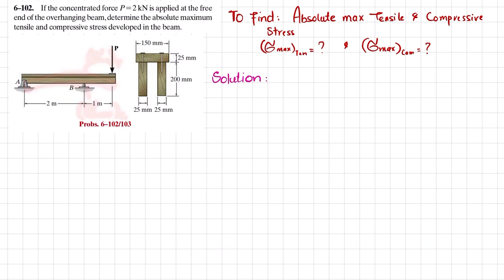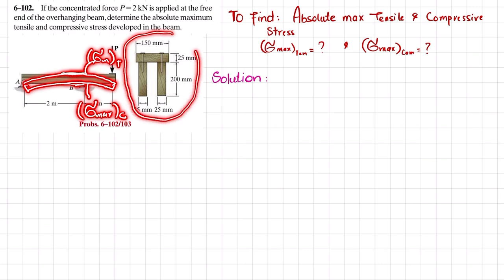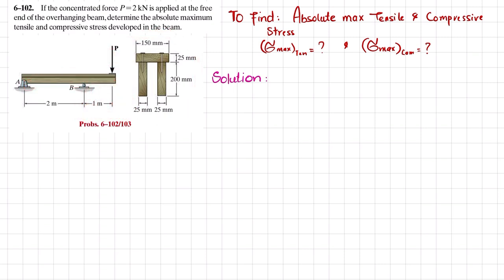The cross section of this beam is shown here. We know that maximum stress is equal to maximum bending moment times C divided by I. We do not know the maximum bending moment, so we will find it using the shear force and bending moment diagram.